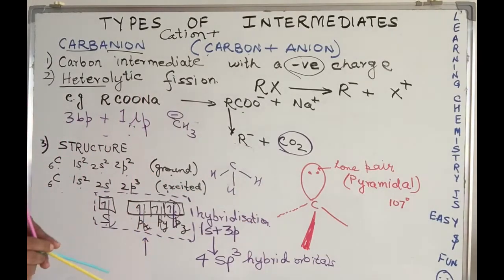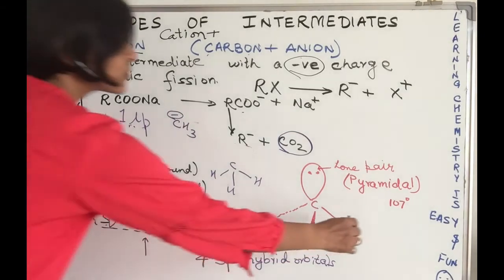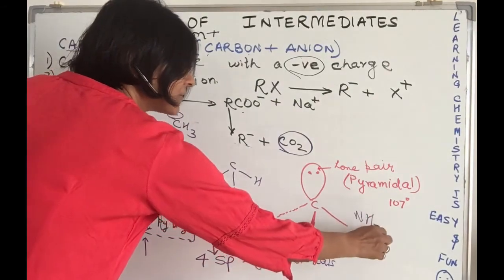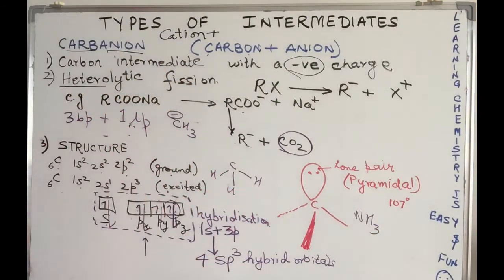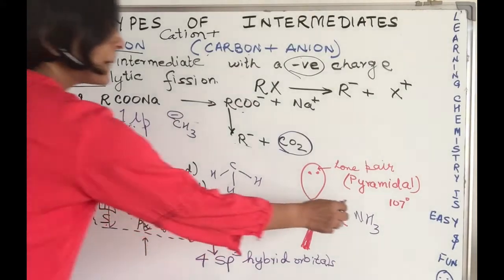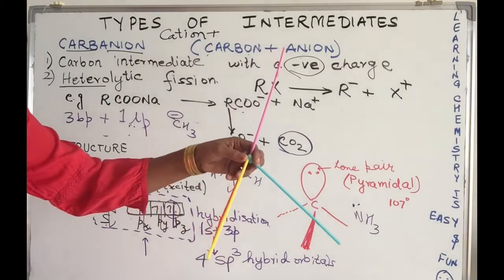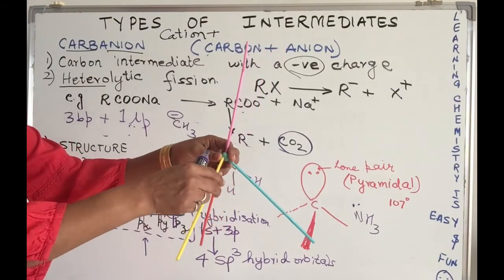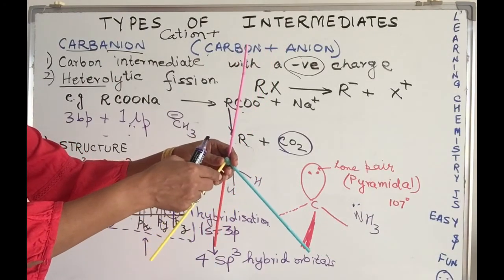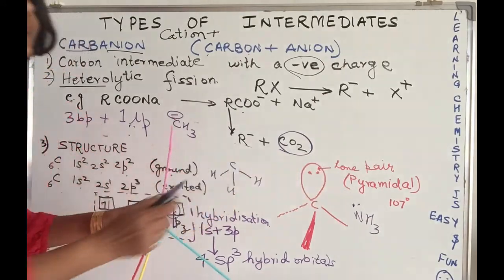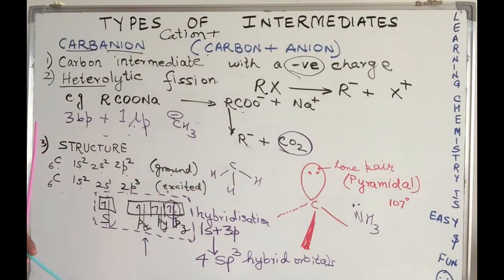We have the lone pair in place, but the shape is given by the bond pairs, so it's a pyramidal shape. What does this remind you of? Yes, it's the same shape as ammonia NH3, because ammonia also has sp3 hybridization with lone pair-bond pair repulsion, so ammonia acquires a pyramidal shape. With the result, the bond angle also reduces to 107 degrees.